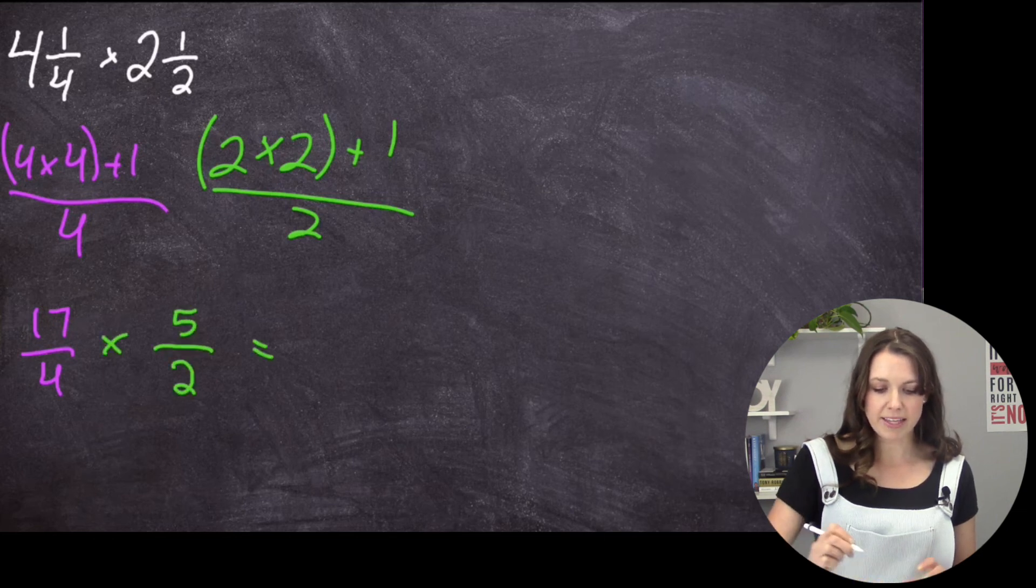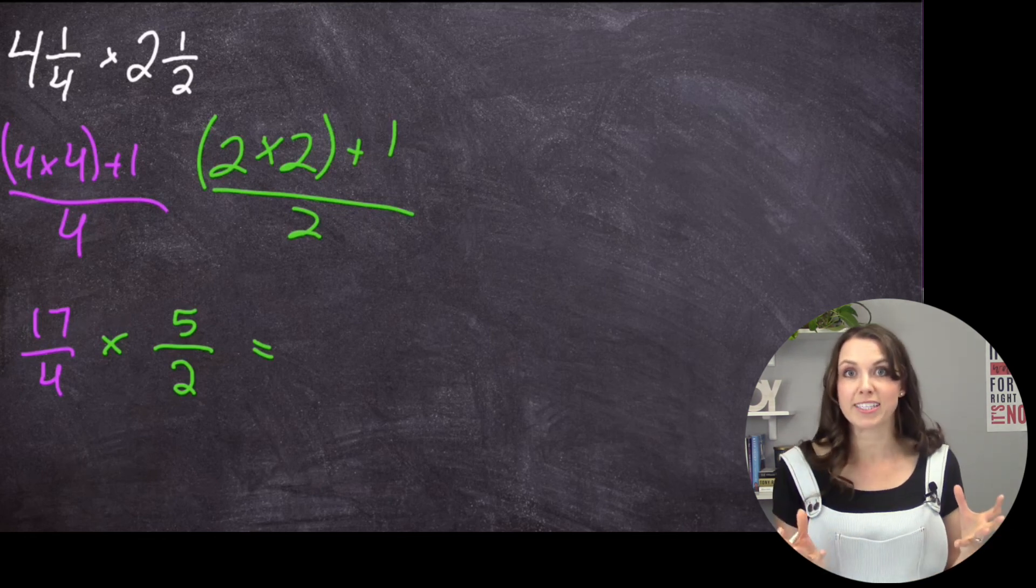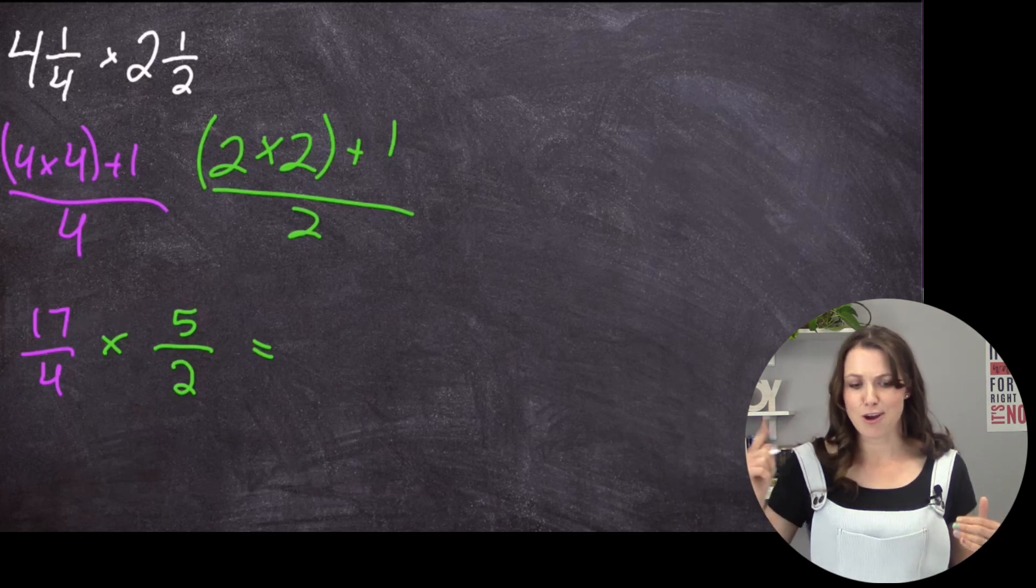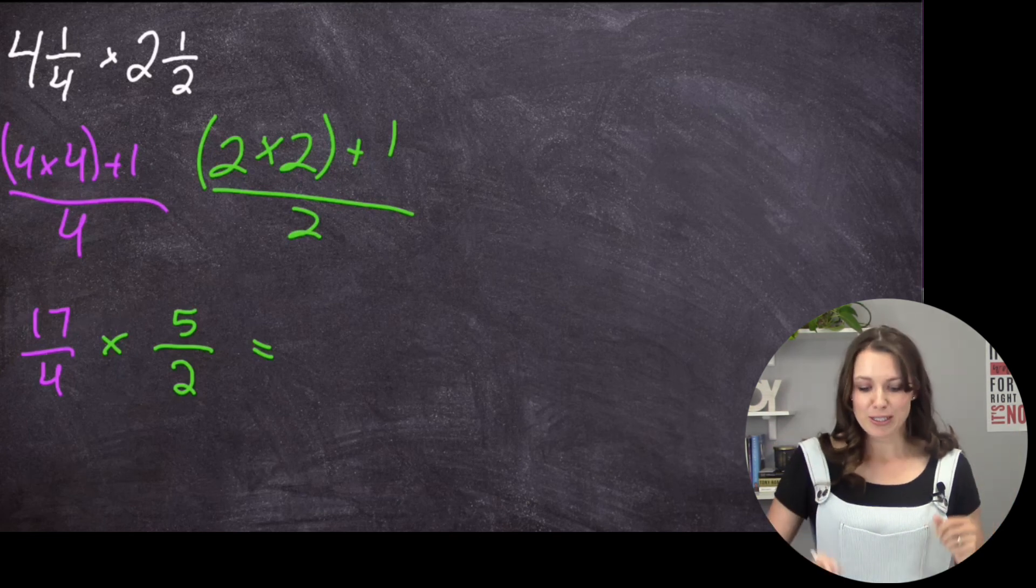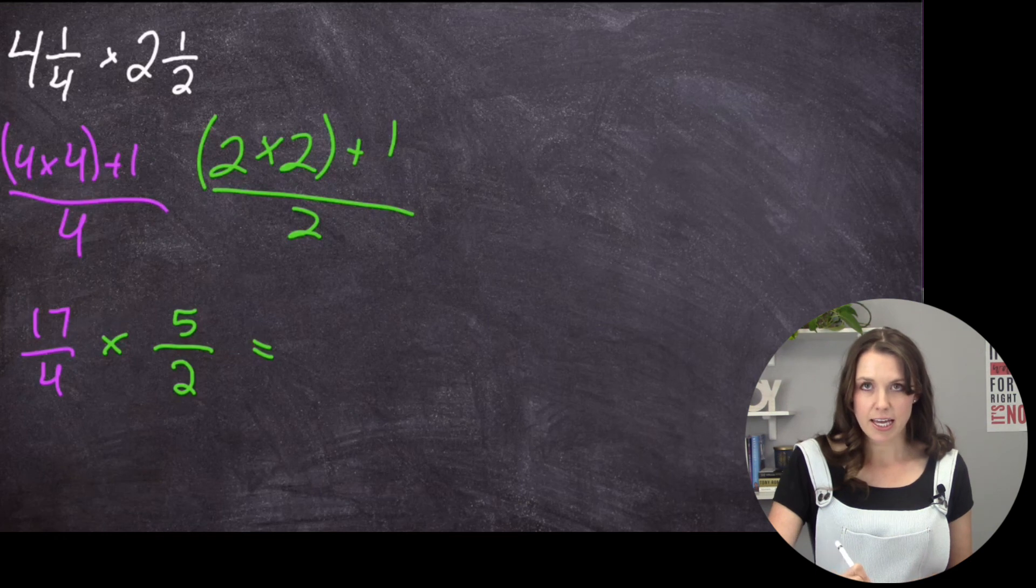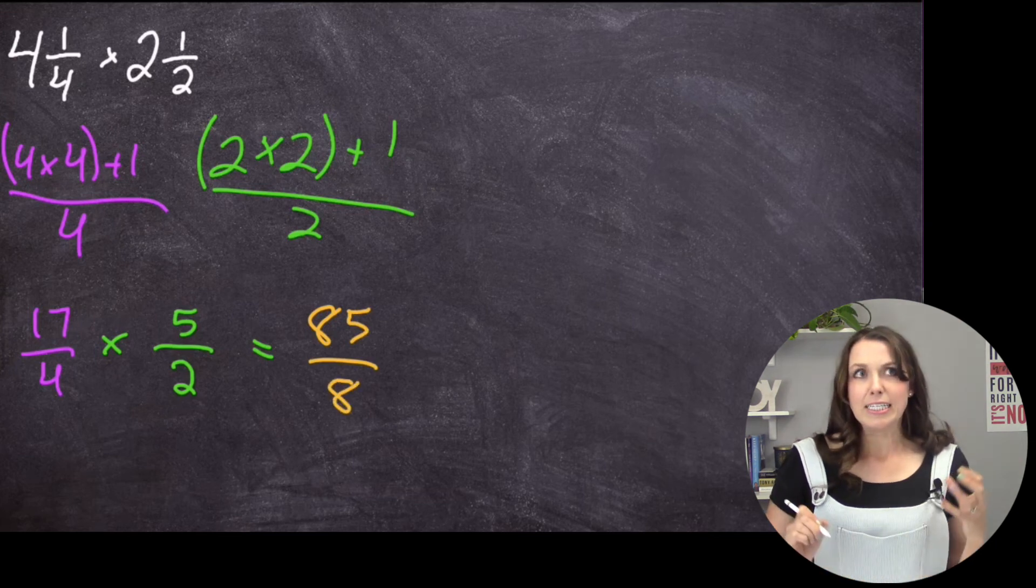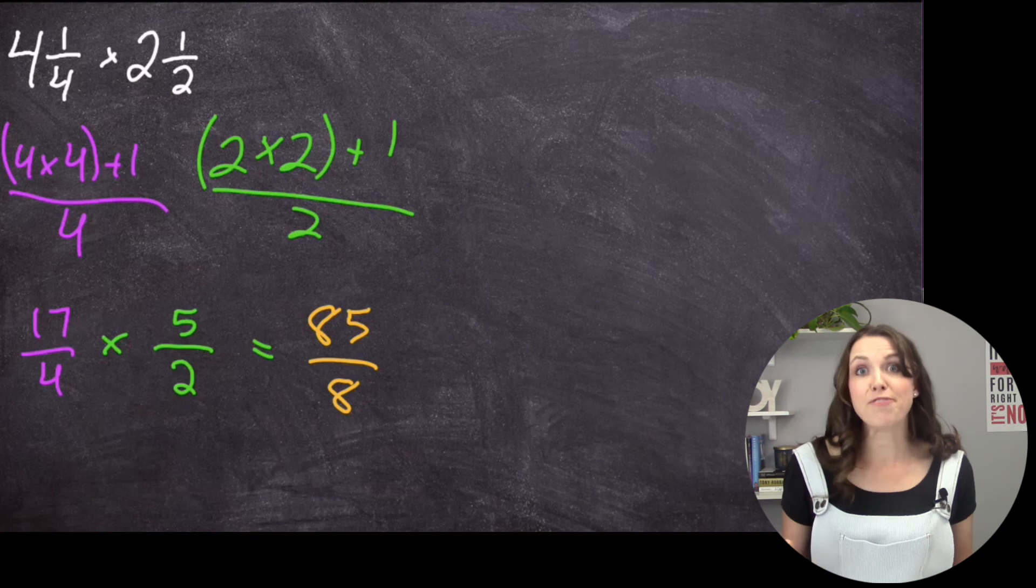So we're going to multiply these together. But let's see if we can do any cross-canceling first. So 17 and 2. Is there a number that goes into both of them? No. 4 and 5. No. So we're just going to multiply straight across. So 17 times 5. Quick, what is it? I got you. 85. 4 times 2 is 8. So we have an improper fraction again.